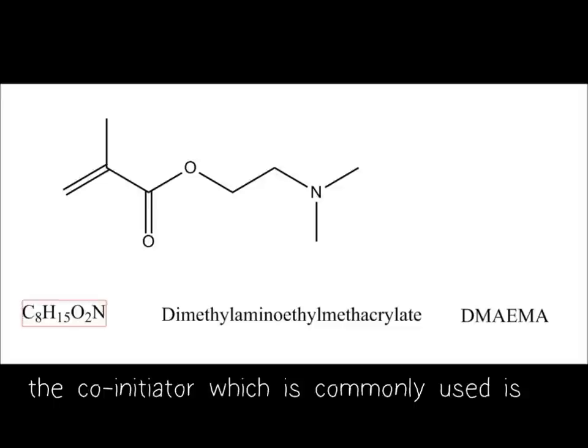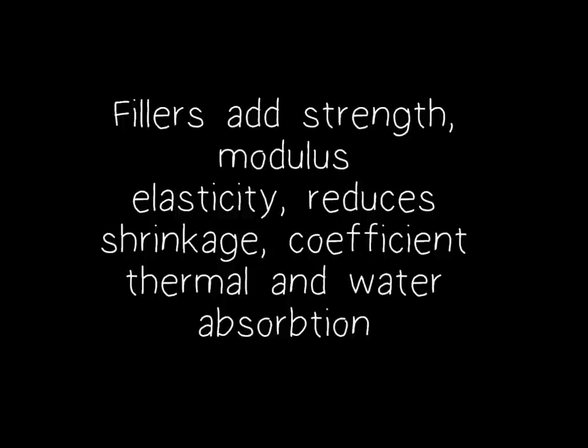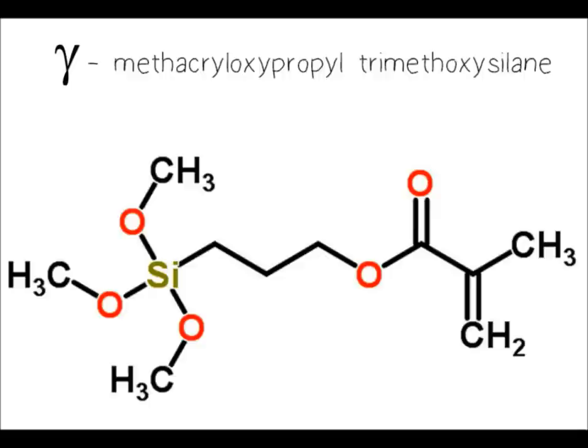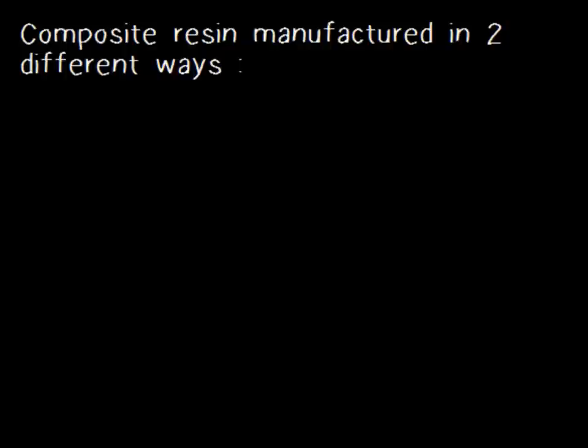The co-initiator commonly used is dimethylaminoethyl methacrylate, or DMAEMA. Reinforcing fillers added can be quartz, colloidal silica, or silica glasses. Fillers add strength, increase modulus of elasticity, and reduce shrinkage, thermal coefficient, and water absorption. The coupling agent used is gamma-methacryloxypropyl-trimethoxy-silane, which is used to enhance bonding between filler particles and the surrounding polymer matrix.